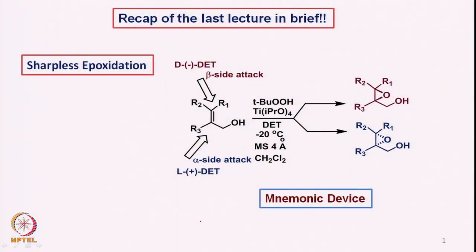Last time we discussed the Sharpless epoxidation. If we have an allylic alcohol, which is a prochiral molecule, we can epoxidize it using a protocol developed by Sharpless — namely, it involves tert-butyl hydroperoxide, titanium isopropoxide, and molecular sieves to remove water or isopropanol.